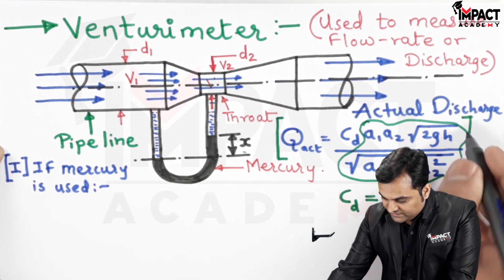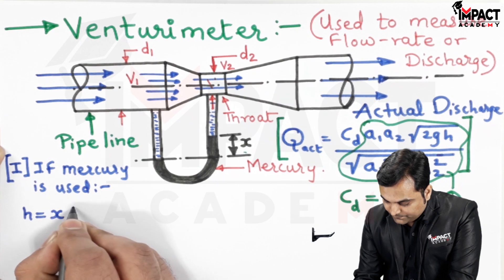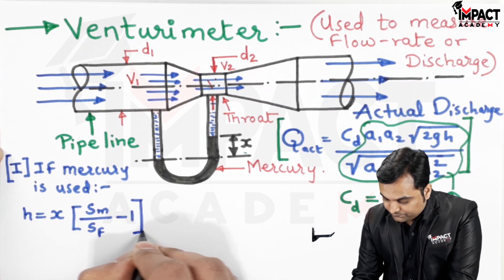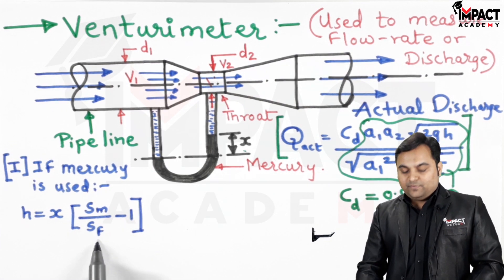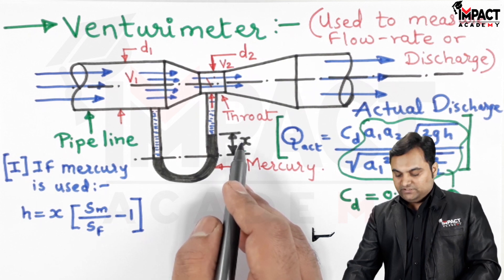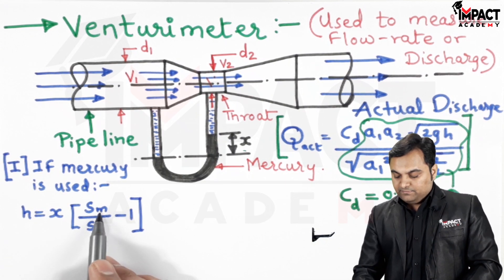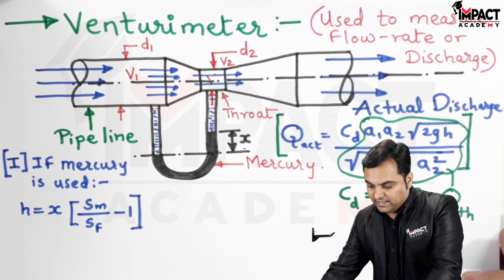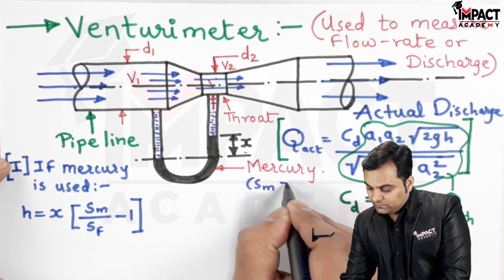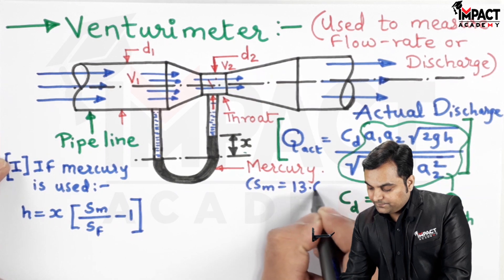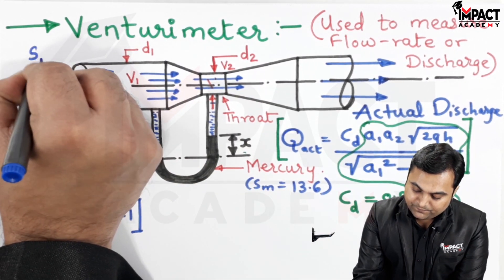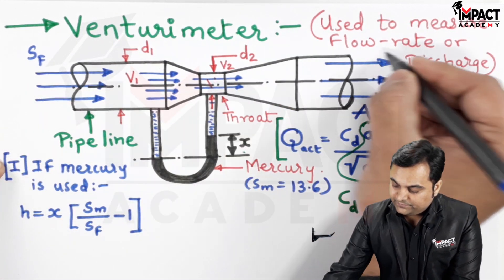Then H will be X into Sm upon Sf minus 1, where X is the mercury reading in terms of meter. Sm is the specific gravity of mercury which is 13.6, and Sf is the specific gravity of this flowing liquid.